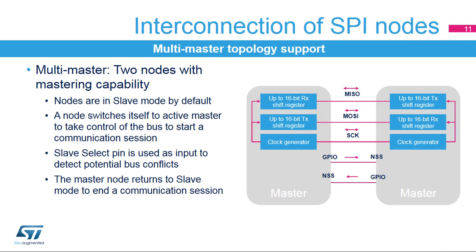SPI networks can operate in a multi-master environment. This mode is used to connect two master nodes exclusively. When either node is not active, they are by default in slave mode. When one node wants to take control of the bus, it switches itself into master mode and asserts the slave select signal on the other node through a GPIO pin. Both slave select NSS pins work as a hardware input to detect potential bus collisions between nodes, as only one can master the SPI bus at a single time. After the session is done, the active master releases the slave select signal and returns back to passive slave mode, waiting for the next session's start.